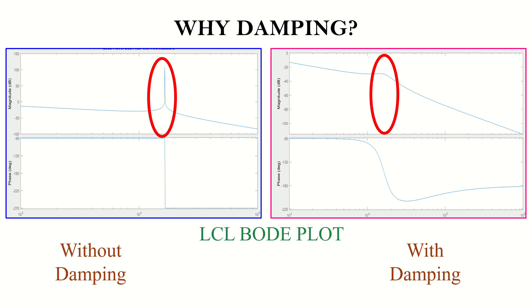The concept behind the damping mechanism is to diminish the magnitude of the grid current at the resonant frequency. Introducing damping into the system causes a modification in the LCL filter Bode plot, as depicted in this figure.